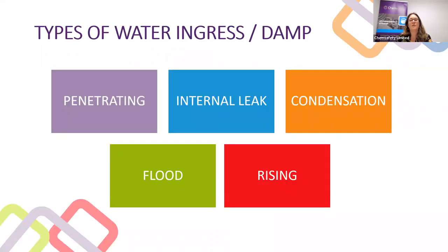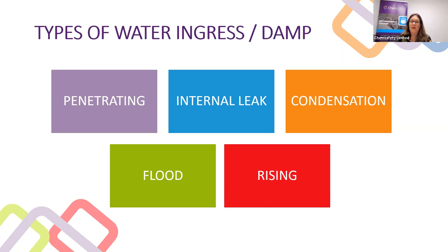Next I want to talk about the types of water ingress and damp. Penetrating damp is when the building envelope has a break or a leak in it that lets in rainwater and other forms of moisture, which then gets trapped in wall and ceiling cavities causing mould growth. A break in cladding can include cracks in masonry, poorly fitted or non-existent flashings, and leaking roofs.